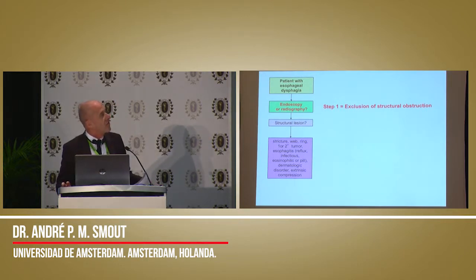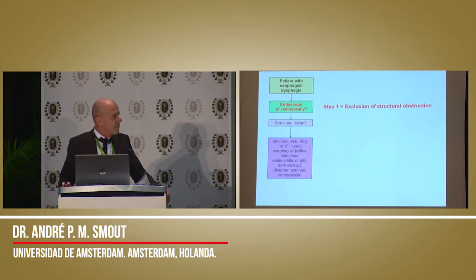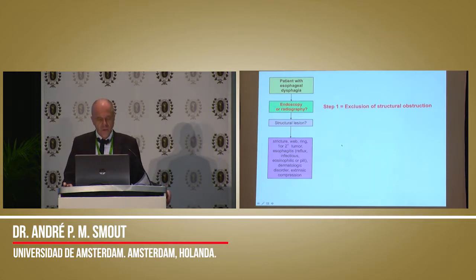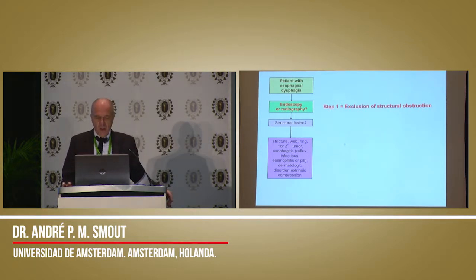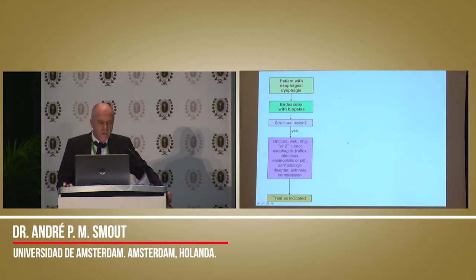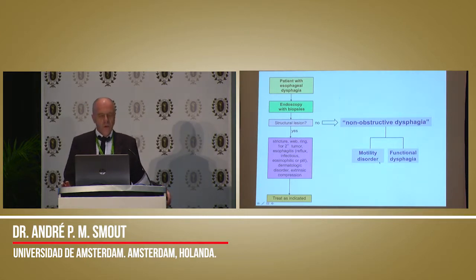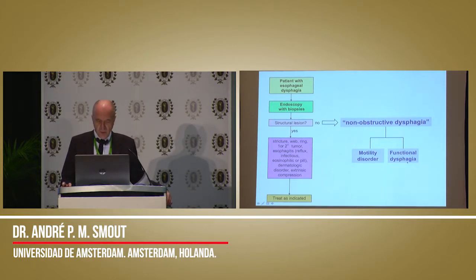The first question is how to exclude structural obstruction — by endoscopy or by radiography, by barium swallow. If you look at the abnormalities that can be there, including eosinophilic esophagitis, then I think it's a no-brainer in this day and age that you should use endoscopy, preferably. If you don't have endoscopy, it becomes a different story. But it should be endoscopy with biopsies. And if that doesn't give an answer to the cause of the dysphagia, it could either be a motility disorder or a functional dysphagia, or you could have missed the structural lesion.